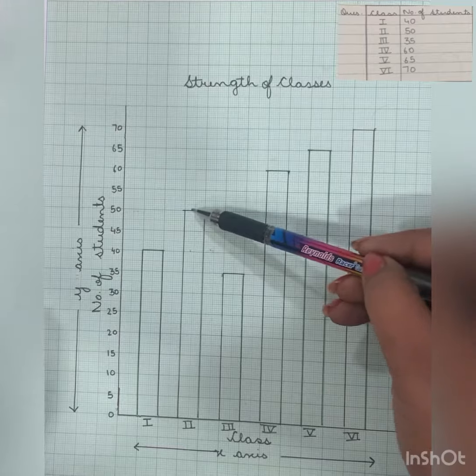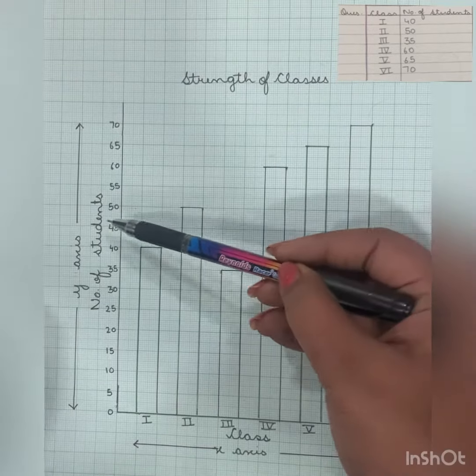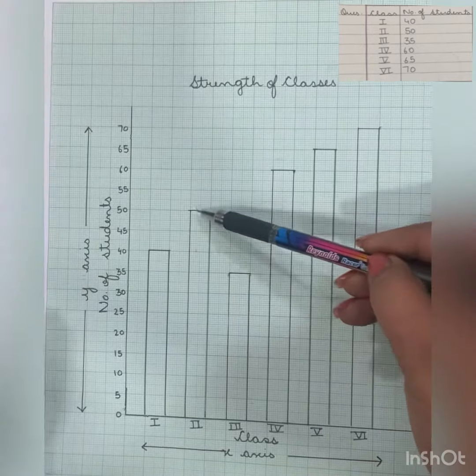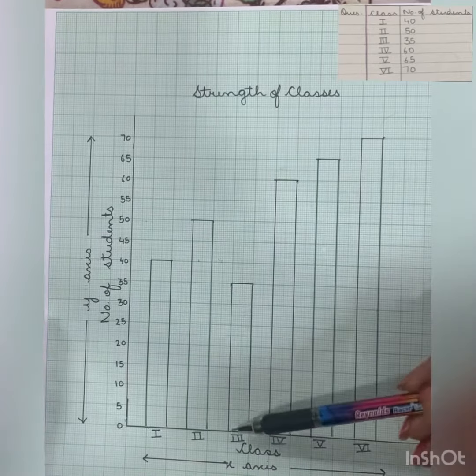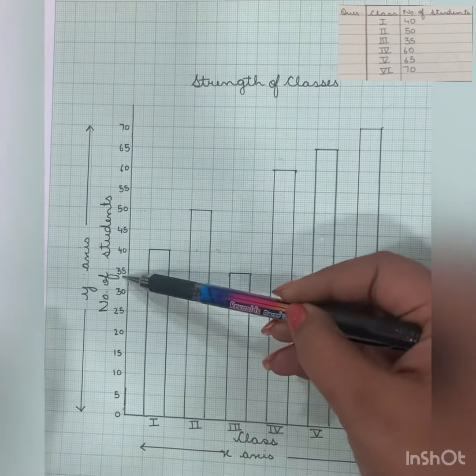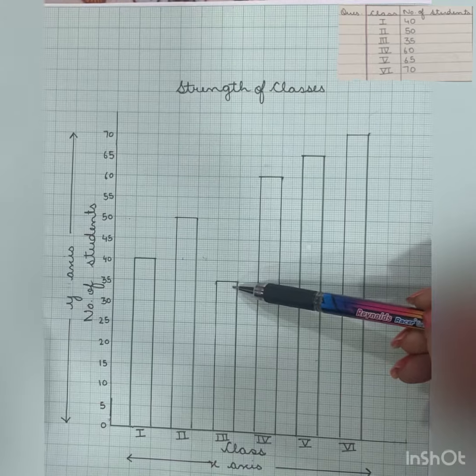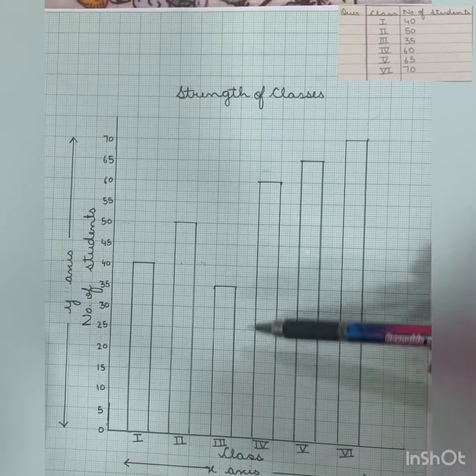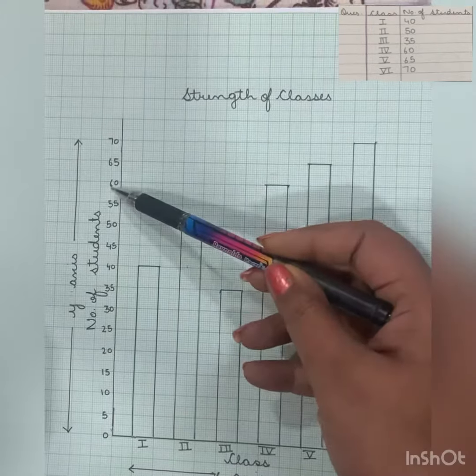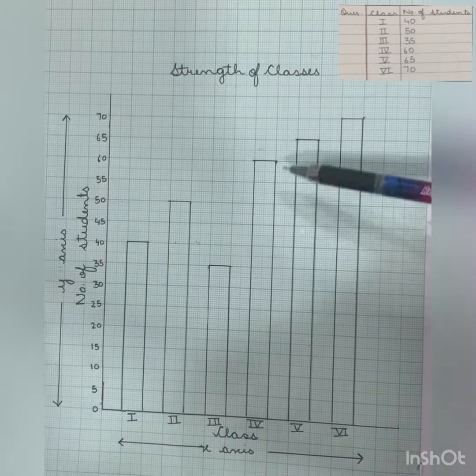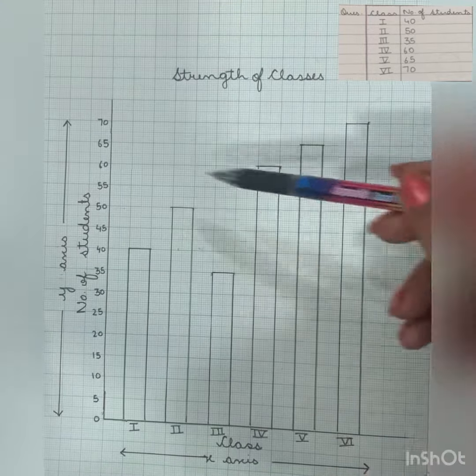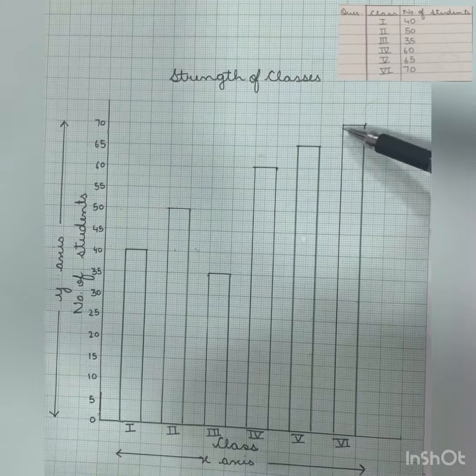We have bar till this point, so how many students in class 2? 50. Next, class 3 there are 35 students. Class 4 there are 60 students. Class 5 there are 65 students. Class 6 there are 70 students.